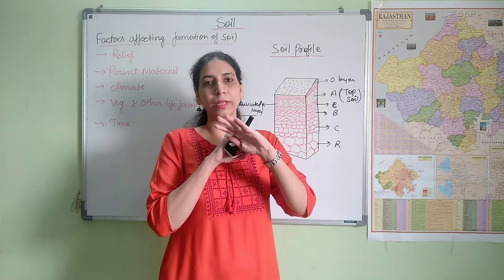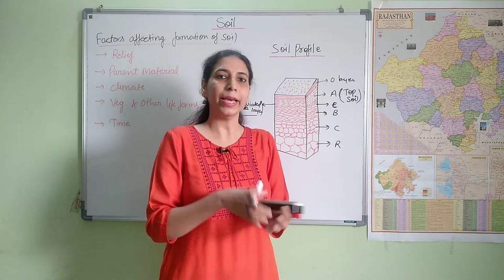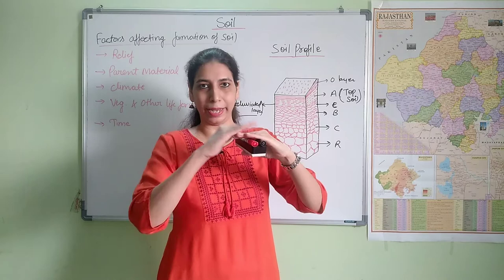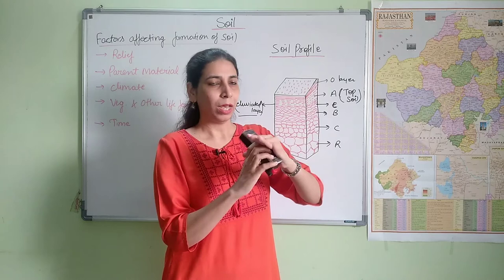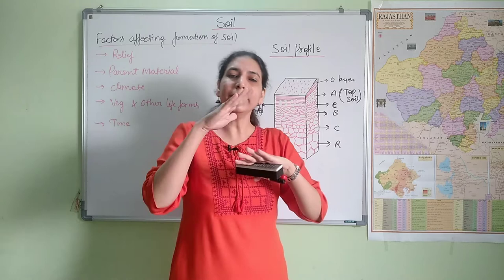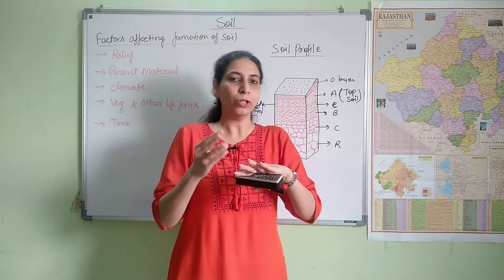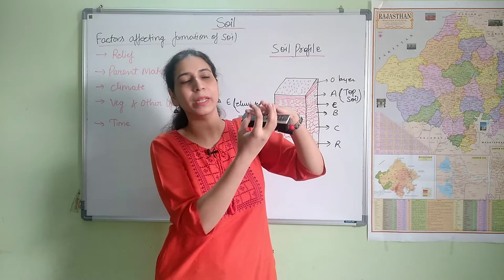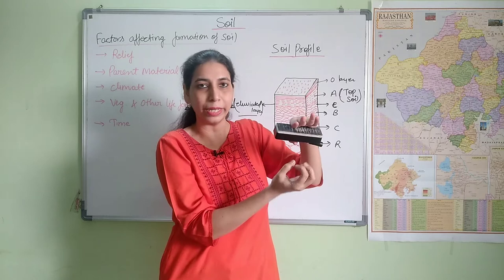In hot and humid climates, you generally get laterite-type soils. What happens when humidity is high and hot weather prevails? In the A layer, there are minerals — some of these minerals will dissolve in water. With excess water, these minerals get leached away, meaning they undergo downward movement. So from the top A layer, they leach down and get deposited in the B layer.